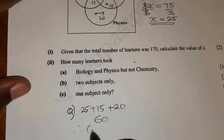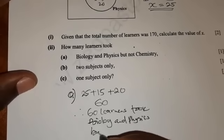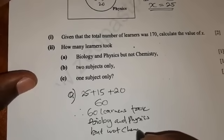So you conclude and say, therefore, 60 learners took biology and physics but not chemistry.